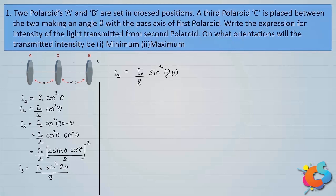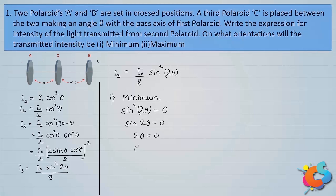There are two questions: for which orientations do you get maximum and minimum emergent intensity? For minimum emergent intensity, I3 is minimum when sin²2θ is minimum. The minimum value of sin²2θ is 0, which occurs when sin2θ = 0, i.e., 2θ = 0°, or simply θ = 0°. This means the angle between A and C should be 0°, so the pass axes of A and C are parallel to each other.